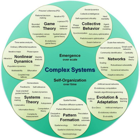Throughput — rate of energy transfer between the system and its environment during the time it is functioning. Microsystem — the system closest to the client. Mesosystem — relationships among the systems in an environment. Exosystem — a relationship between two systems that has an indirect effect on a third system.